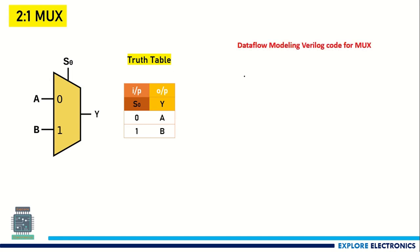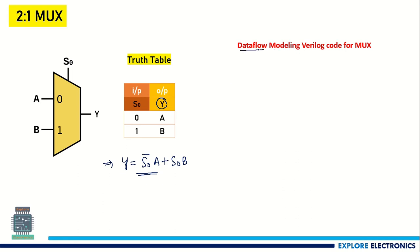Let us write the Verilog code in data flow modeling first. For data flow modeling, we require a logical expression for output Y. Y equals S0-bar AND A, plus S0 AND B — meaning A is selected when S0 is 0 and B is selected when S0 is 1. Using this logical expression to write the Verilog code is called data flow modeling.